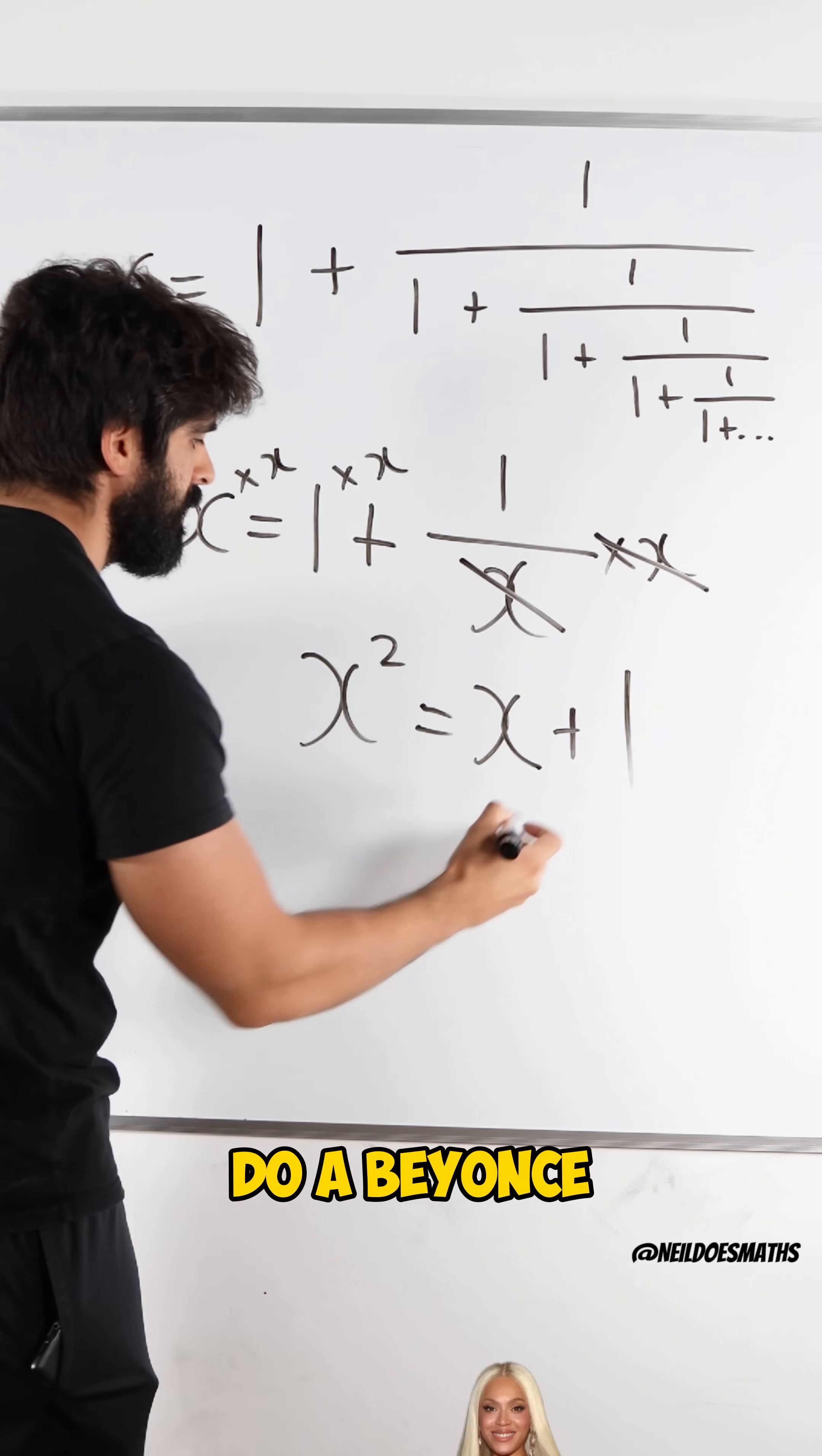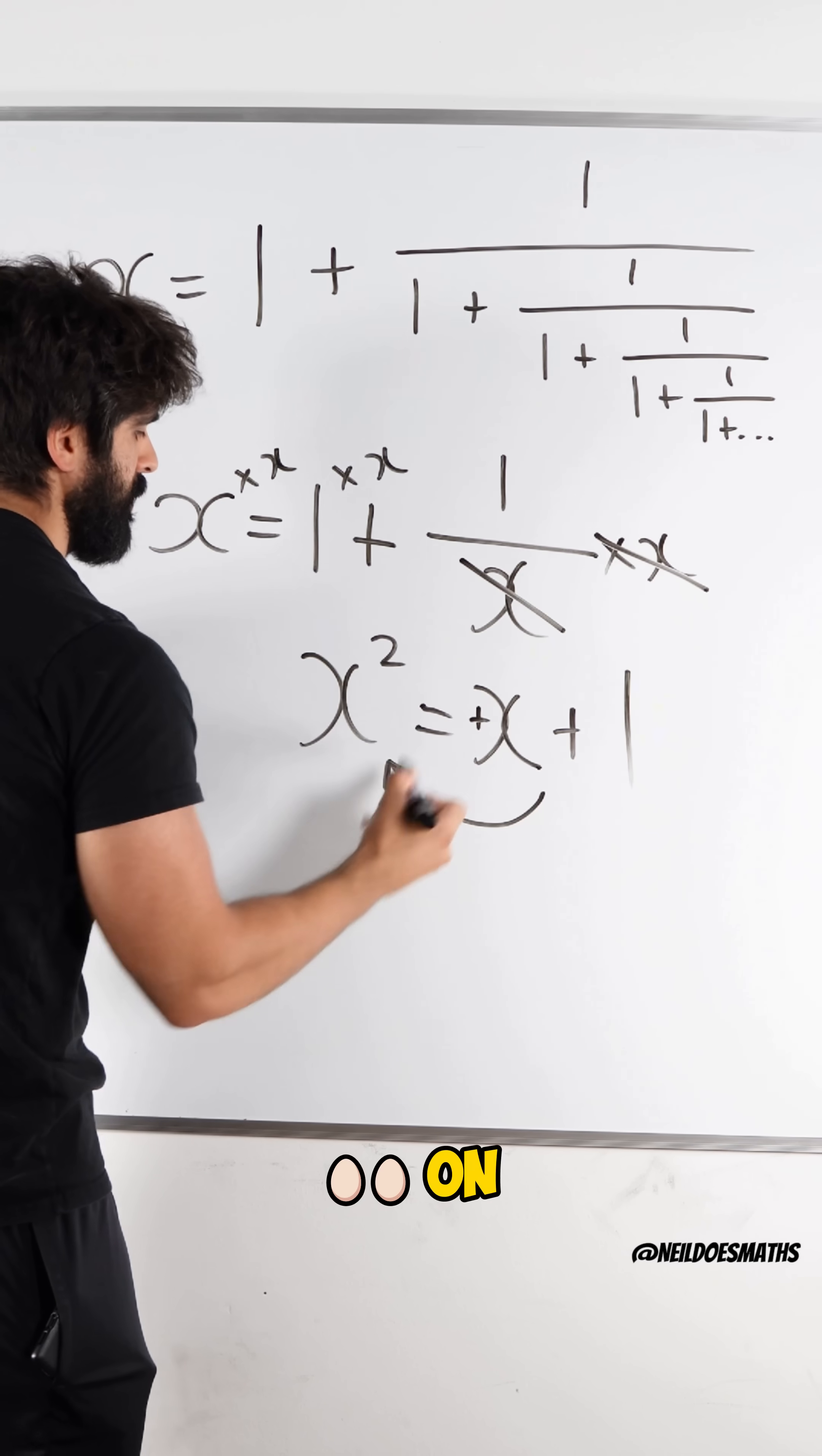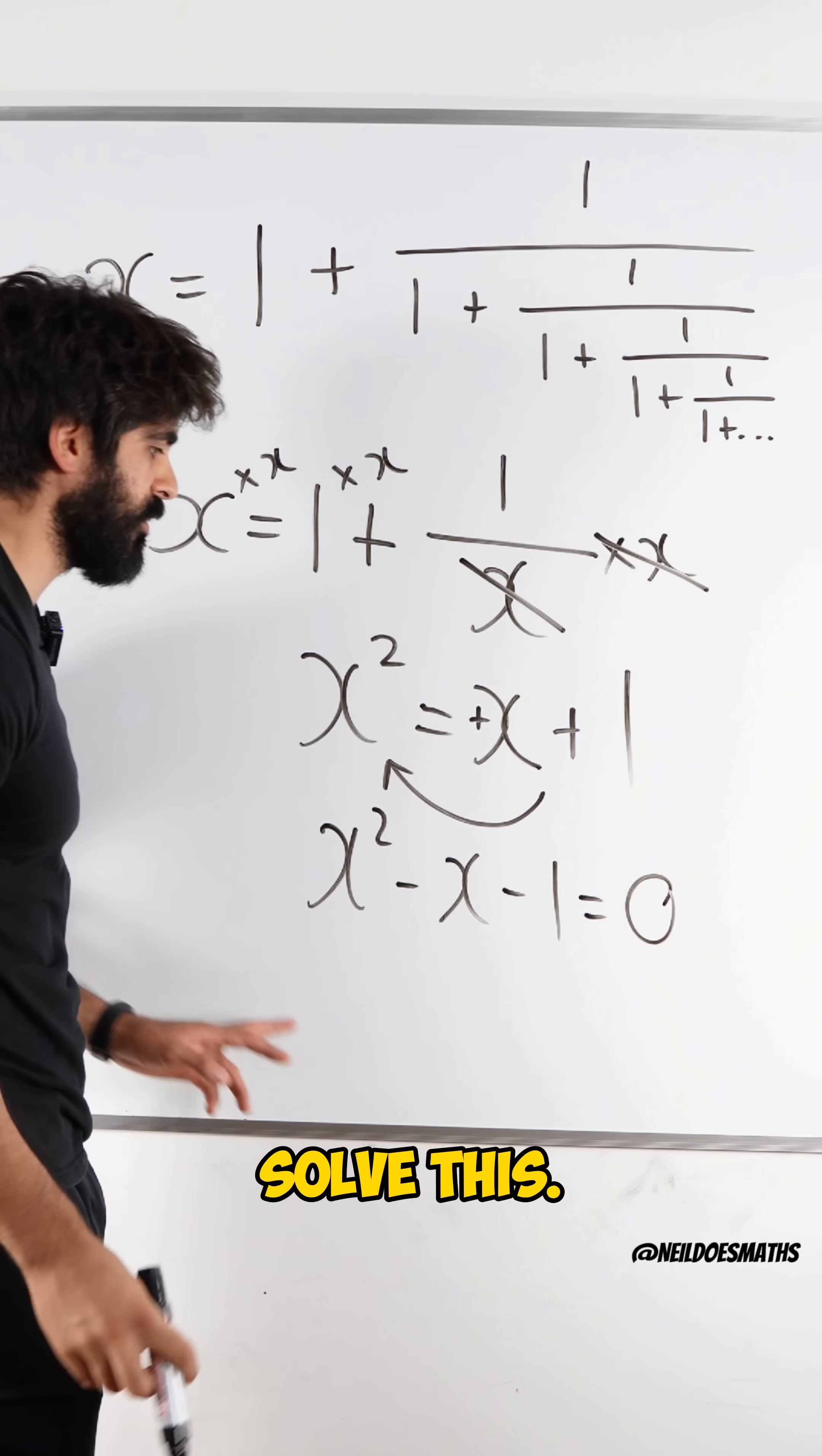Now, to solve this, we're going to do a Beyoncé. Move everything to the left to the left. This is a positive x. On the left side is a negative. And this plus 1 on the left is a minus 1. And now we need to solve this.